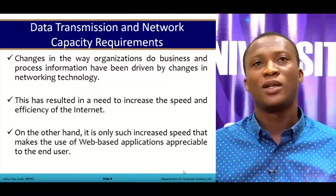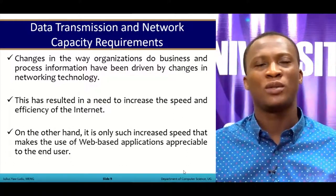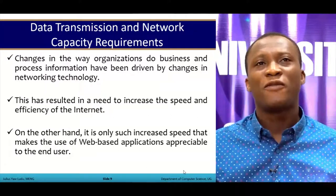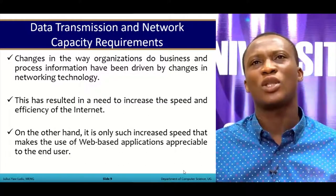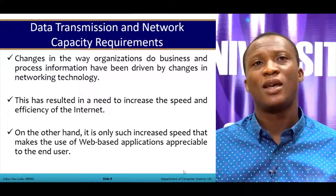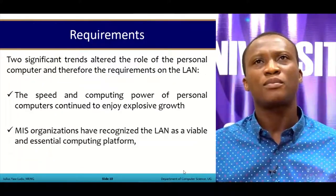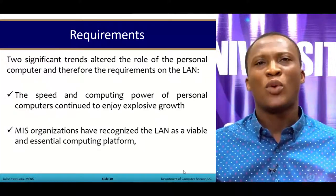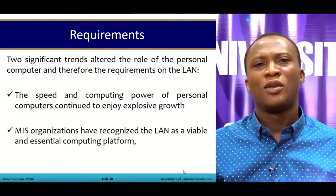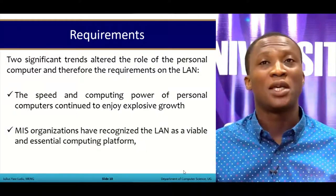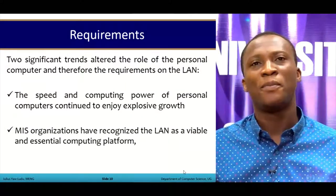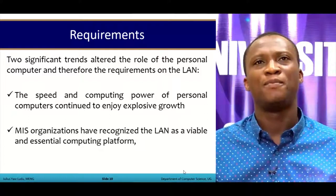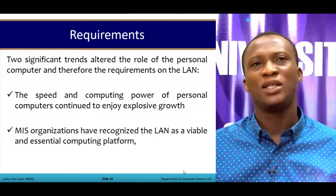Imagine having a slow network — you click to search for something in Google or a search engine and it takes forever. We need fast and increased speed. We need devices or technologies that will allow us to browse the internet more effectively. One of the requirements is the speed and computing power of our personal computers. We are talking about i7 and i5 computers having speeds of 32 gigabytes or even as low as 8 gigabytes of RAM. We need computers that can process our data faster due to the explosive growth of data in our current era.